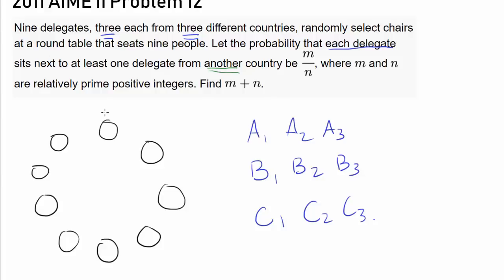For example, if A sub 1 sits at a spot, we want at least 1 of the adjacent spots to be inhabited by a delegate from country B or C. But trying to count it this way is going to be really messy and take a long time, because for every single person we can have so many different combinations — B1 and C1, or A2 and C1, or A2 and B1 — and that condition must apply for every single chair. I simply do not want to do this by direct counting.